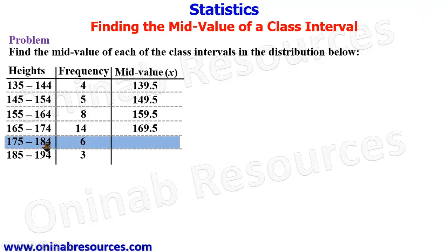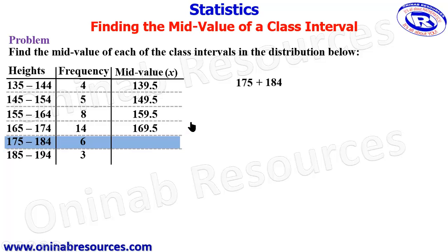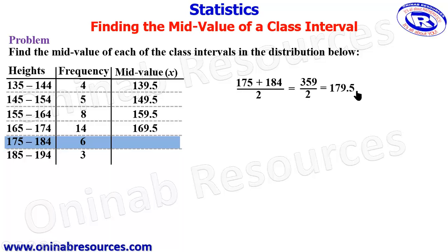The fifth class interval is 175 to 184. Adding and dividing by 2, that gives 179.5, which represents the mid value of the class interval 175 to 184.